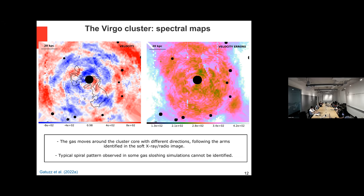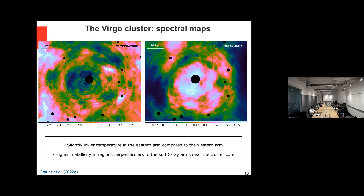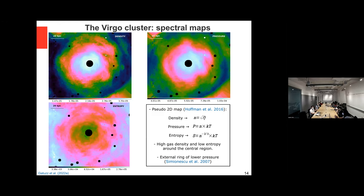We also have temperature and metallicity maps. For the metallicities you can see an enhancement in directions perpendicular to the radio contours from the previous plot — those wide regions are north-south while the radio contours are west-east. The temperatures and metallicities are not the best constrained because we don't have the soft band. But computing pseudo-densities, pressure, and entropy maps is also possible. For the pressure map, it was interesting to find a ring of lower pressure outside the cluster core — there was a hint for this in a previous paper but now we are seeing it very clearly.